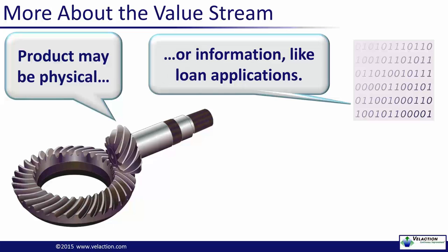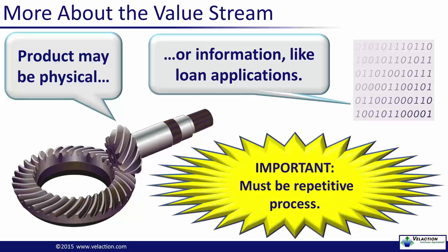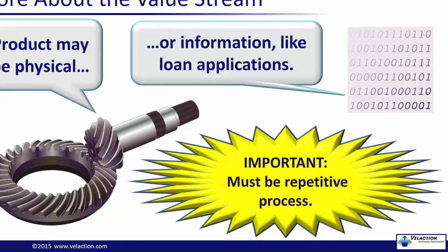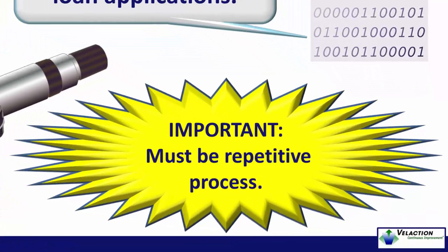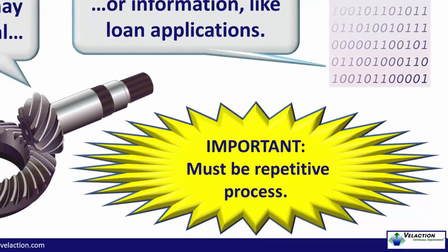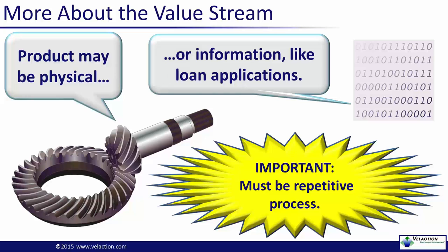For example, the materials management process is not a value stream, even though it contains a bunch of connected processes. One thing to keep in mind is that value stream maps only work for repetitive processes. For example, it may be difficult to create a value stream map for a job shop. The flow of products through that system are simply too variable to get the full impact of a value stream map. That's not to say that a value stream map can't be useful in a mixed model line, though. It simply means that there has to be the potential for some consistency in flow.